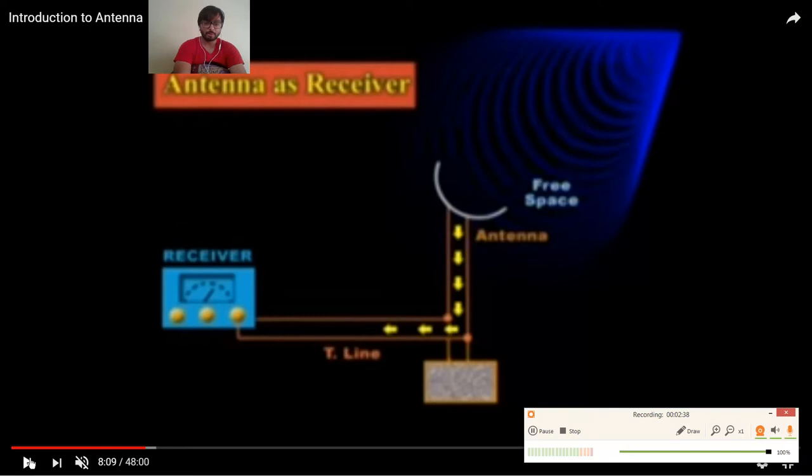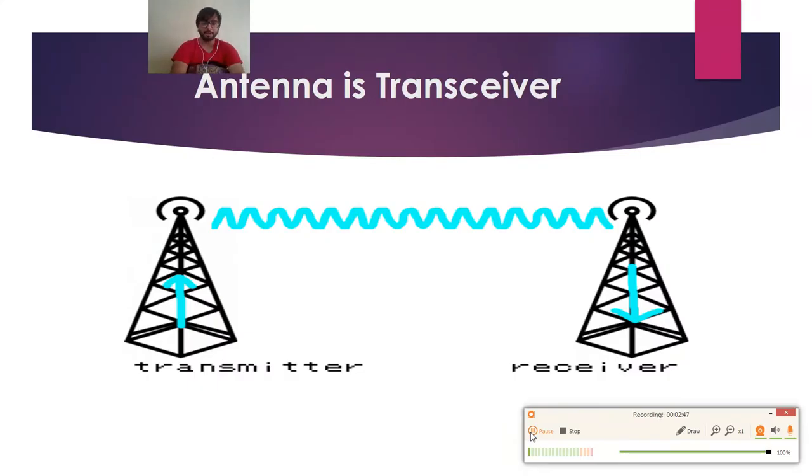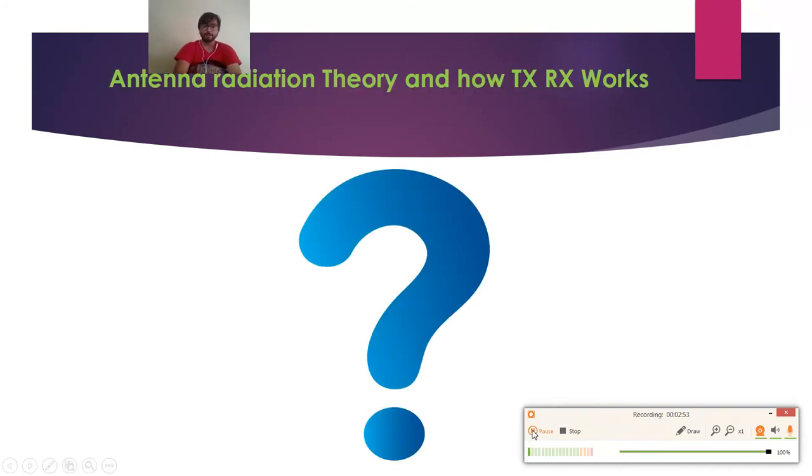So antenna acts like a receiver as shown in the animation. Friends, this is a very basic introduction of an antenna. But still the question is: what is antenna theory? How does antenna radiate? How do transmitter and receiver work?